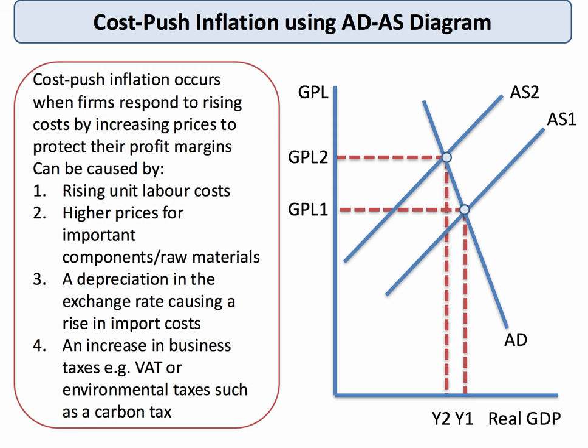On cost push inflation — how do we show that on a diagram? Cost push inflation is when firms respond to higher costs by choosing to raise prices to protect their profits. Unit labour costs might have gone up, component prices may have increased, the exchange rate may have fallen, or perhaps the business is affected by an environmental tax. Those higher costs cause an inward shift of aggregate supply from AS1 to AS2, leading to higher prices as shown on the diagram. That's cost push inflation.